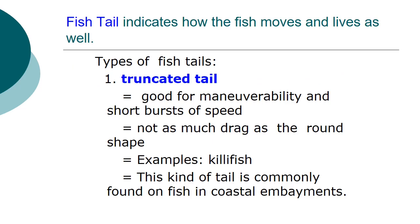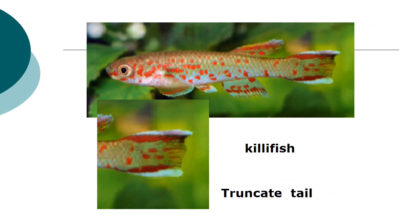Fish tails indicate how the fish moves and lives. The truncate tail is good for maneuverability and short bursts of speed, with not as much drag as the round shape. Examples include the hatchetfish. This kind of tail is commonly found on fish in coastal environments, and can also be seen in the killifish.